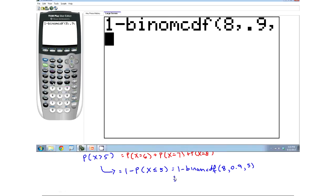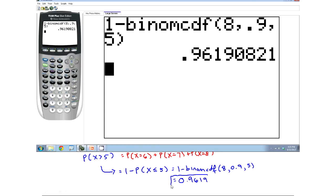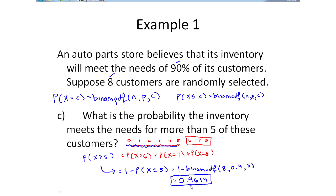And then you're going to type it exactly as you see, eight comma, point nine, comma, five. And when you go to do this, if you have a newer calculator, it's going to look a little bit different. It will ask instead for trials and probability of success. It's exactly the same idea. Your final answer should be point nine, six, one, nine.